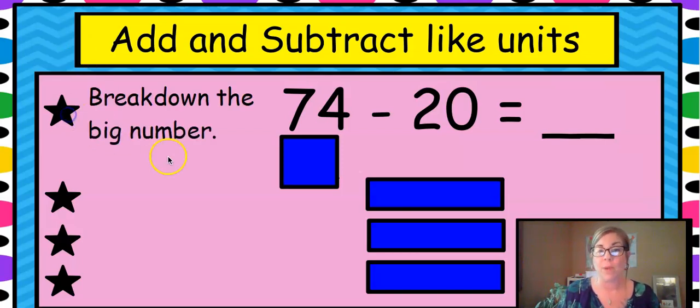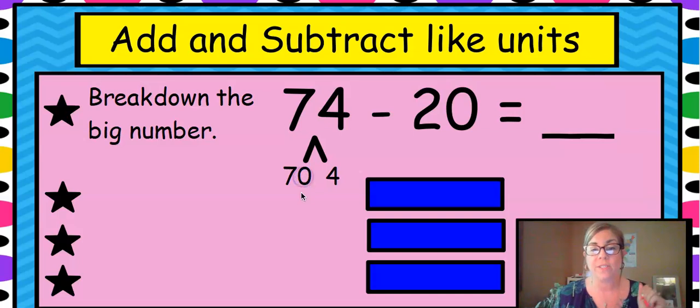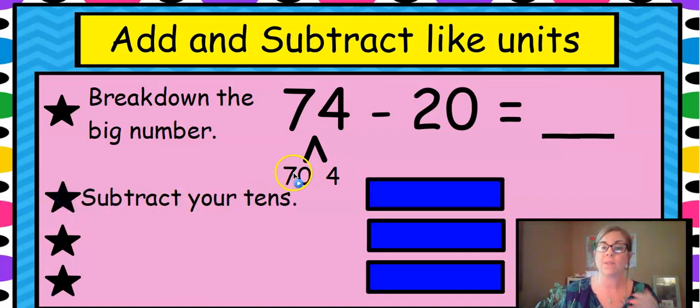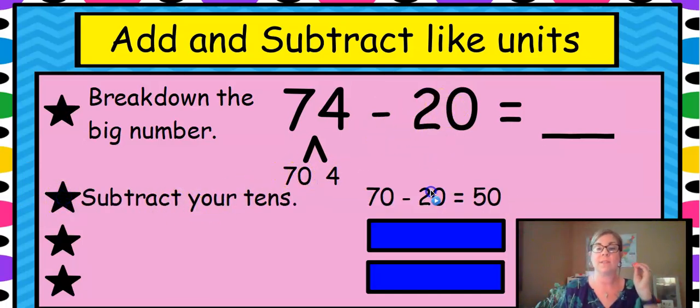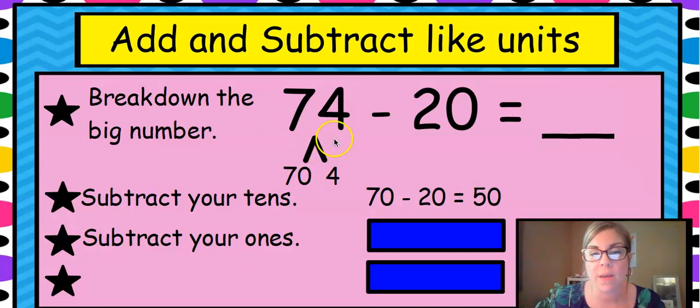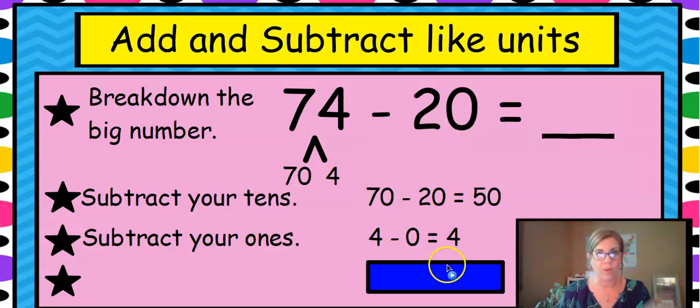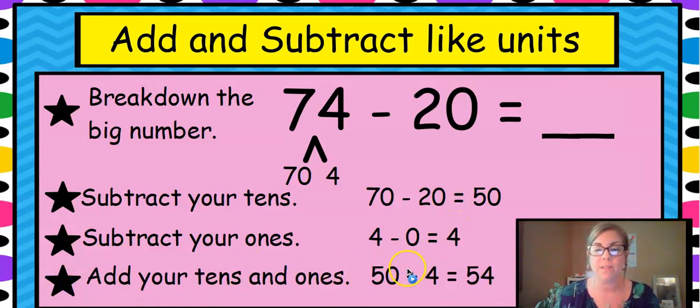Now we're going to do another one. Break down the big number. Take out your tens. Oh, look at the sign. It's subtract. We're going to subtract our tens. So seven tens minus two tens is five tens again. Now let's look at our ones. We're going to subtract our ones. That's the next step. You did the tens. Now you do the ones, tens and then ones and tens and then ones. Don't forget them. Four ones minus zero ones is four still. You have four. You don't take away anything. Zero. And you still have what you have when you started. And now we're going to add them together. And 50 plus four is 54. So you're separating, subtracting, and then you're putting it back together.